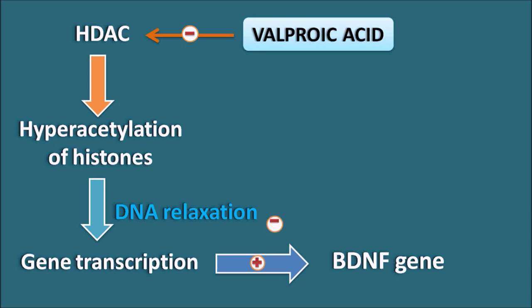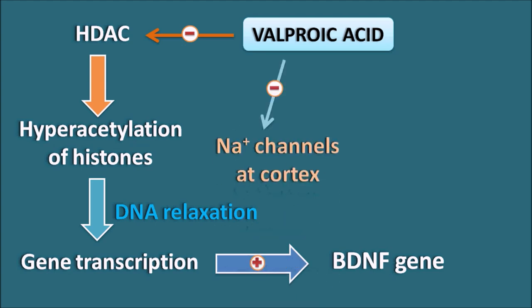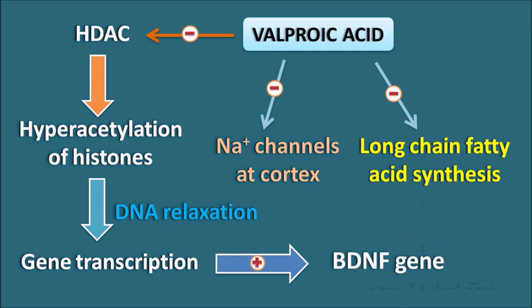Apart from these mechanisms, valproic acid can directly block sodium channels at the cortex, inhibiting excitatory pathways. It can also inhibit long-chain fatty acid synthesis, which may reduce the synthesis of inflammatory prostaglandins. Valproic acid is also effective at blocking T-type calcium channels, which are particularly important in absence seizures. In this way, valproic acid acts by multiple mechanisms.